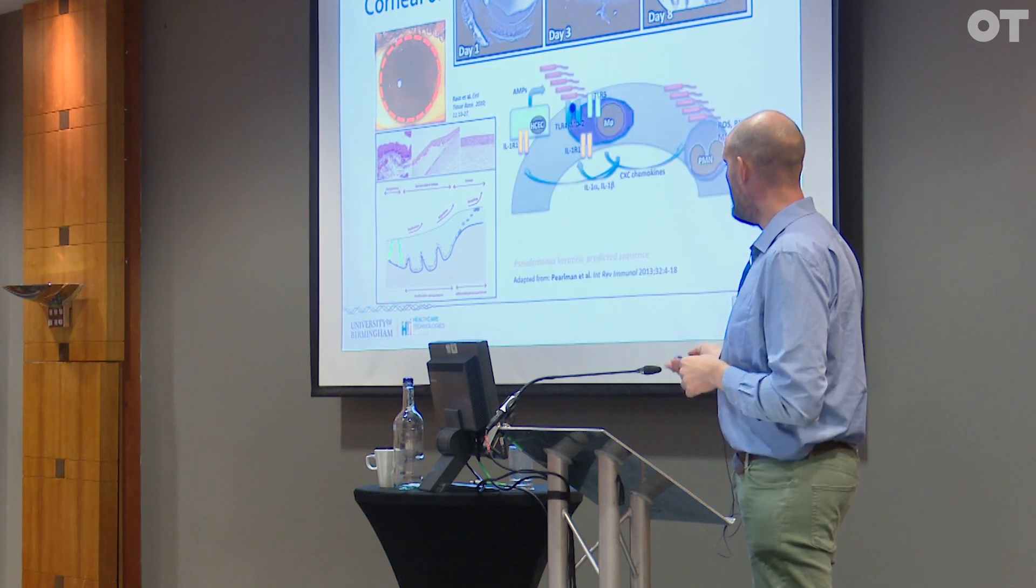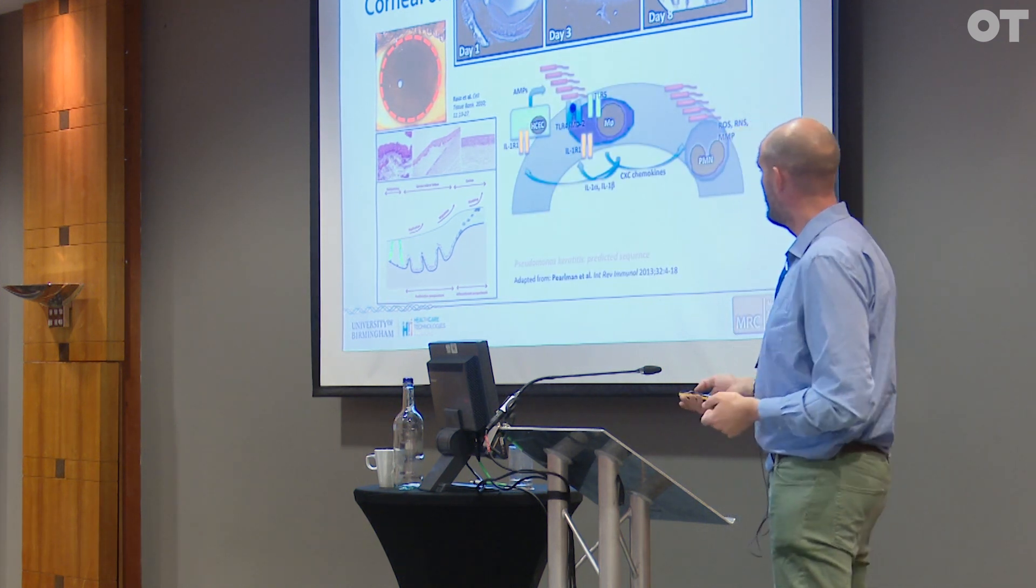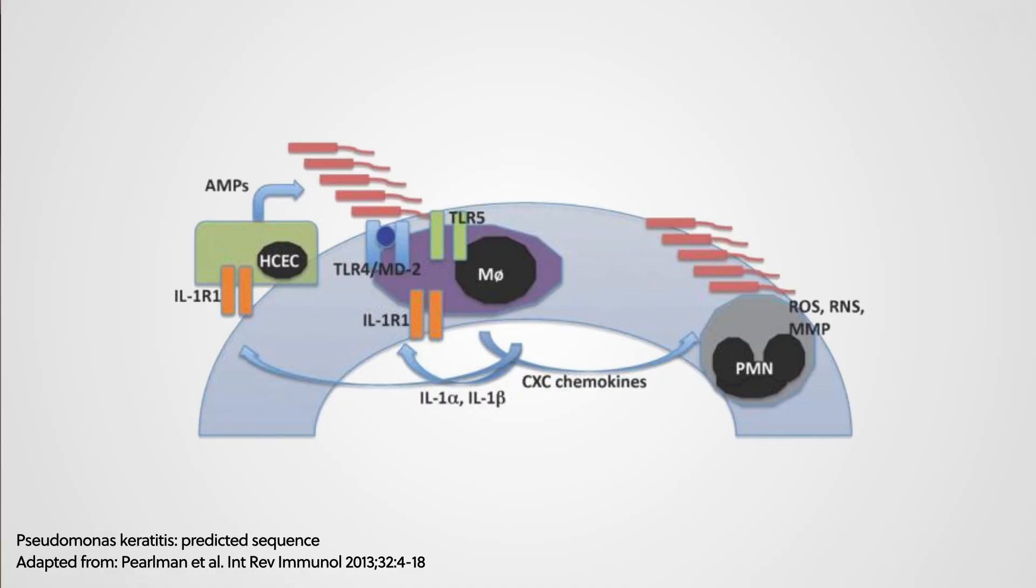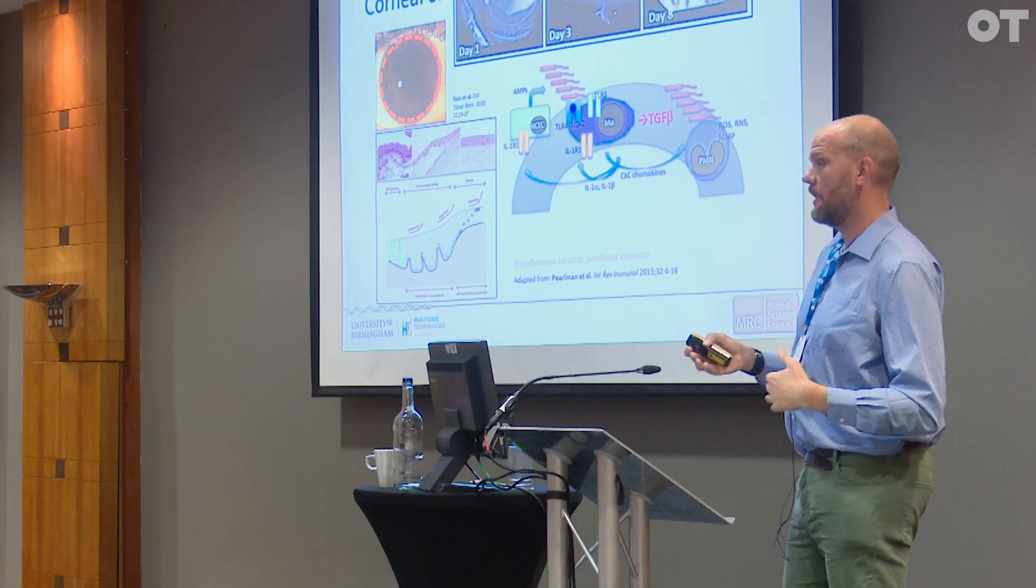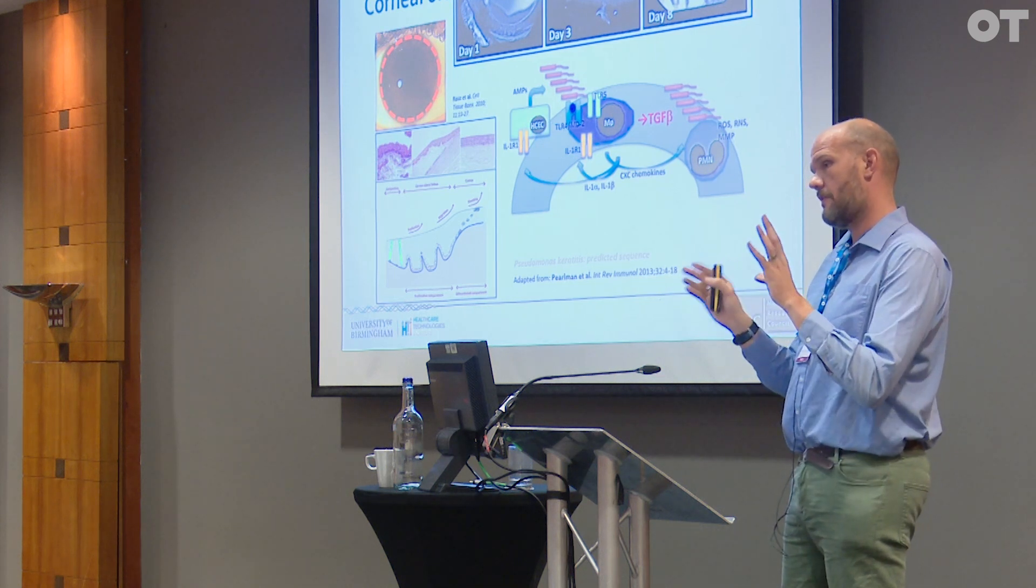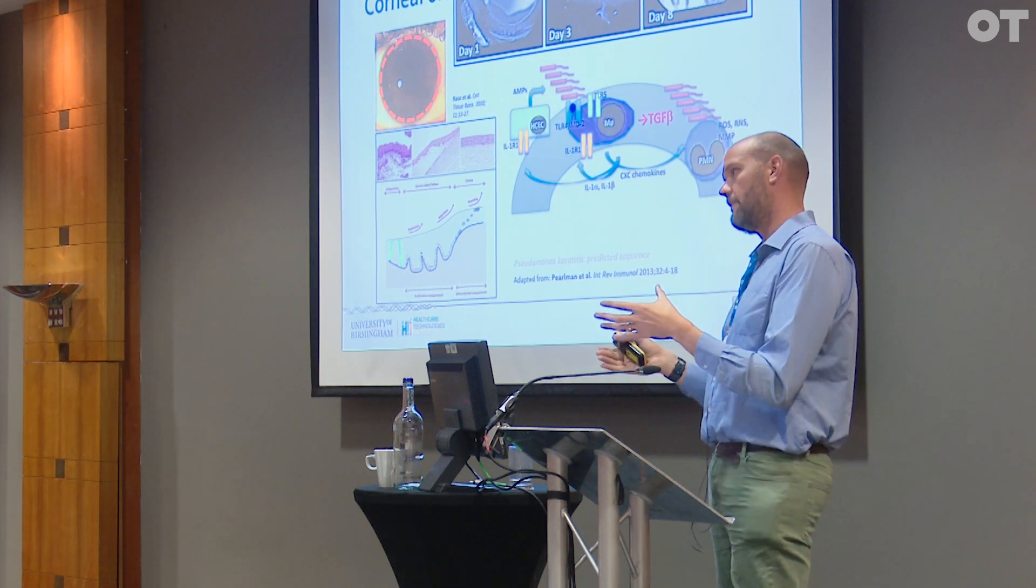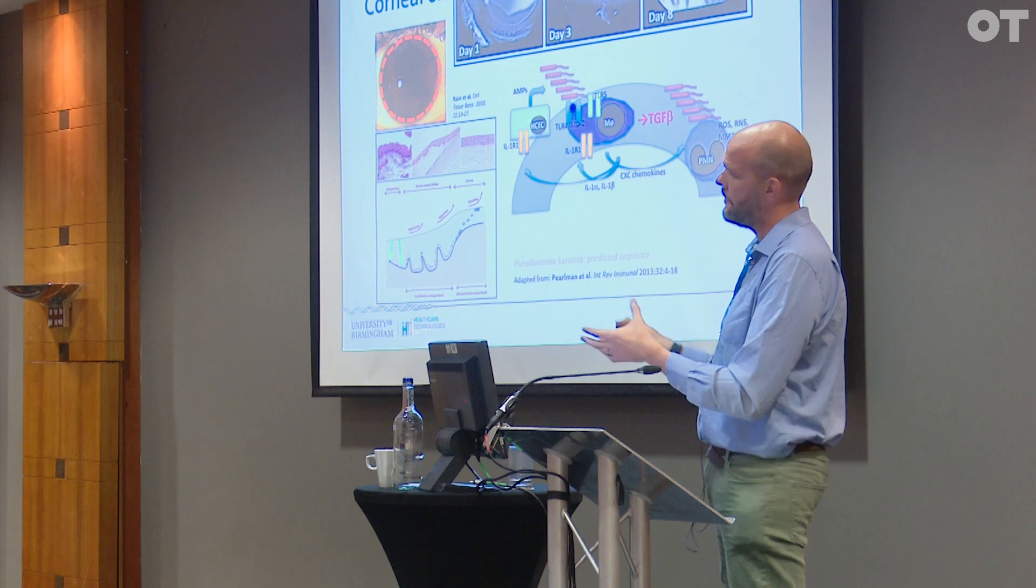Now the major issue is where you introduce some kind of infection onto the surface of the eye. This is an image from Perlman et al. looking at Pseudomonas keratitis. The Pseudomonas infection effectively drives an inflammatory cascade, which ultimately results in the production of a molecule called TGF-beta-1. TGF-beta-1 is produced locally and causes cells called fibroblasts within the cornea to differentiate into cells called myofibroblasts.